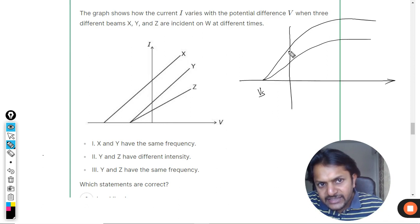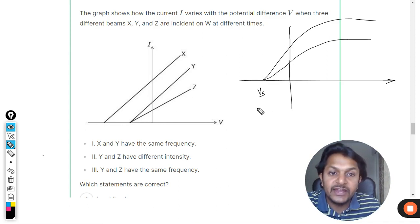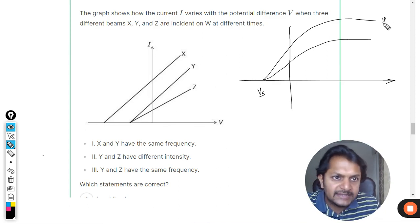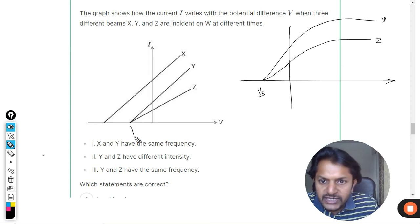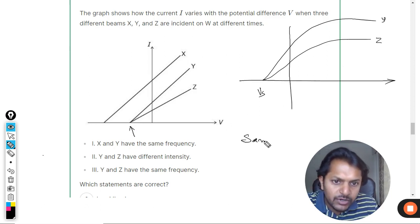Now, this graph is going like this, this graph is going like this. When is this graph created? This graph is created when these two have the same frequency but different intensity. So Y and Z, which are closing here at the same point, I will say they have the same frequency.